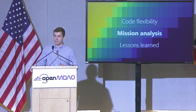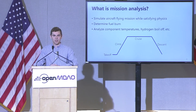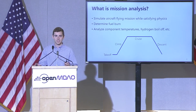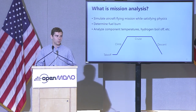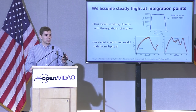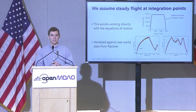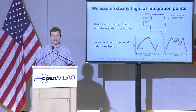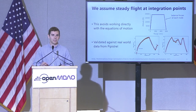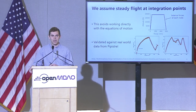So what do we mean by mission analysis? We're solving this aircraft model as it simulates flying a mission with valid physics so we can get useful results — things like fuel burn, component temperatures, or in the future hydrogen boil-off over the mission. The way we do this is we break up phases into nodes and at each node assume steady state, balancing the forces. This avoids working directly with the equations of motion. It might seem like you'd lose important information, but in practice this actually matches flight test data quite closely.